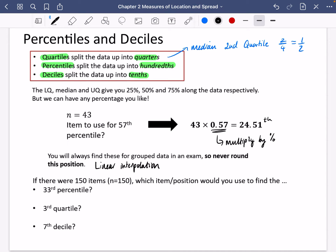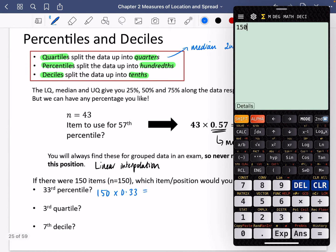Here's a little example. If there were 150 items, which item or position would you use to find the 33rd percentile? You would do 150 and find 33% of that, so 150 × 0.33. You would use the 49.5th position or item and then do linear interpolation.